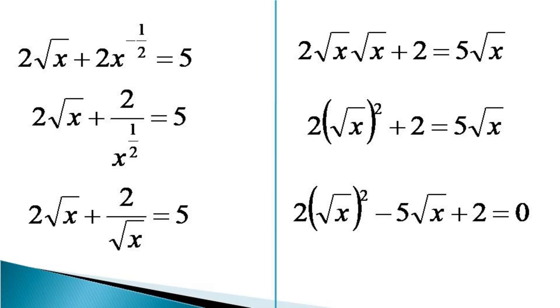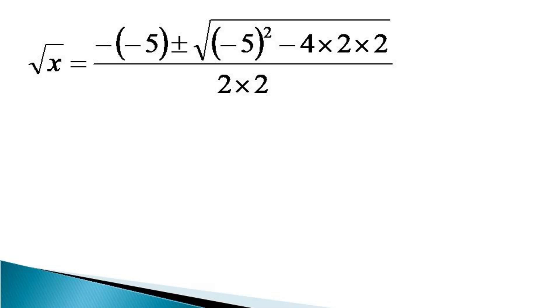It can be observed that this is a quadratic equation in √x, and the solution from the quadratic formula can be written as √x equals -(-5) ± √((-5)² - 4×2×2) all divided by 2×2.